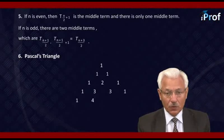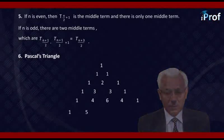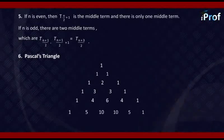1, 4, 6, 4, 1 in the fifth row, 1, 5, 10, 10, 5, 1 in the sixth row.